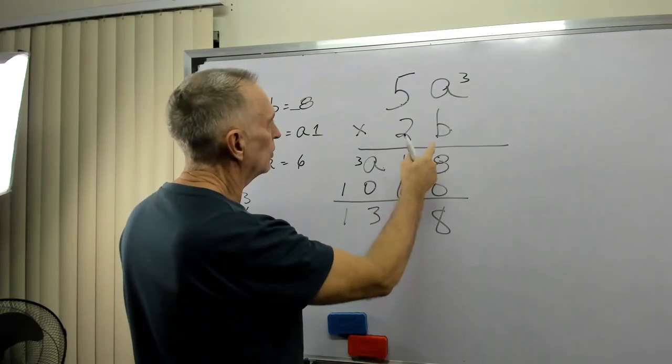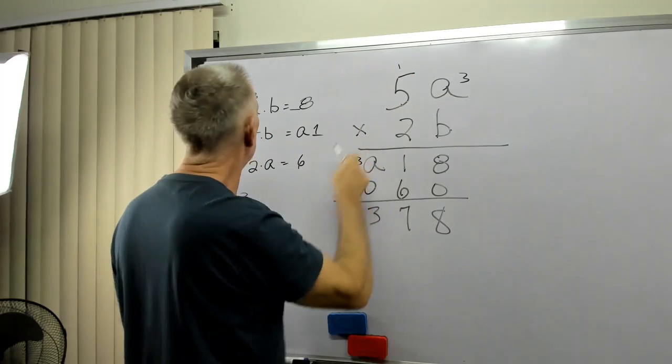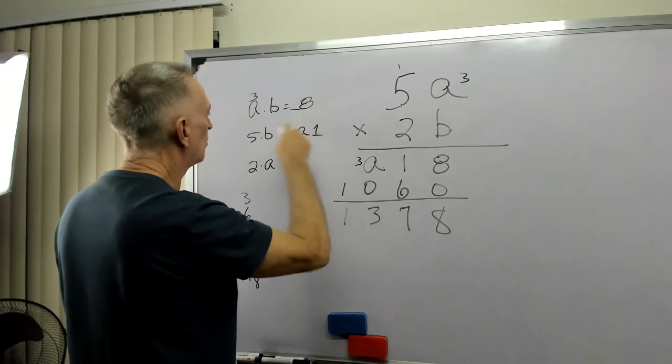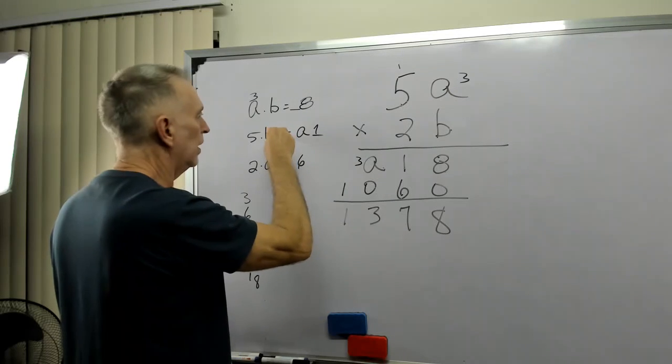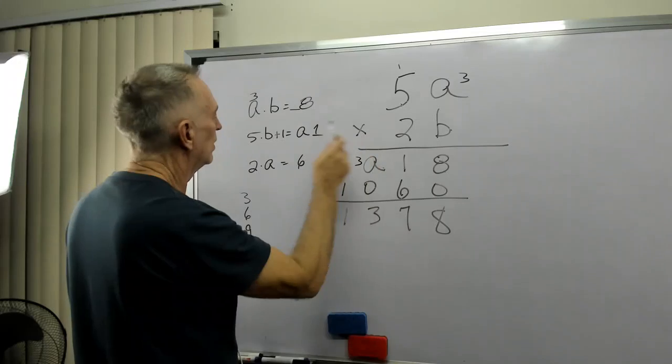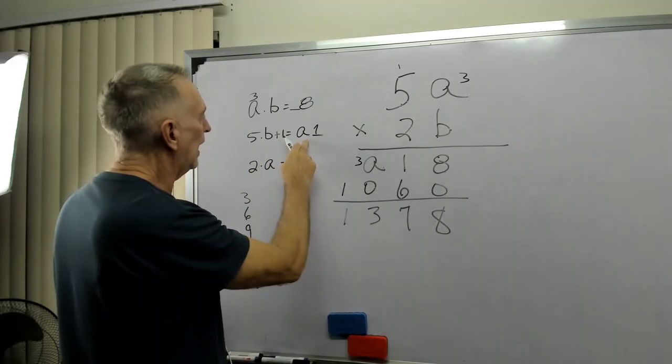Also, the other thing that we can look at here, if this is 18, I have a carry of 1. So, 5 times B plus 1, if that's an 18, would equal A1.